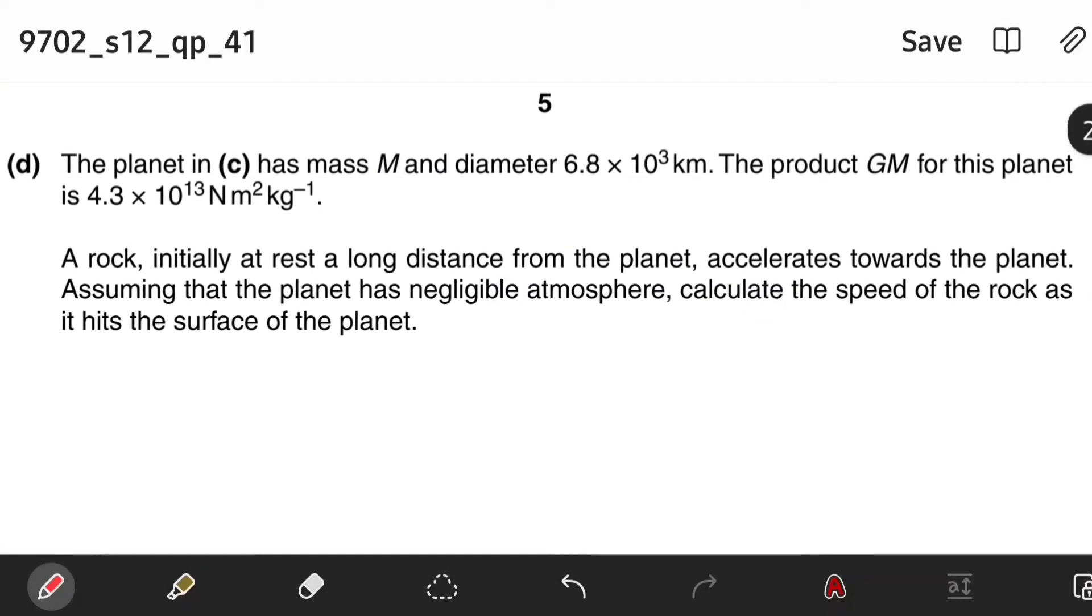Moving on to Part D. The planet in C has mass M and diameter d. The product GM for this planet is 4.3 × 10¹³ Nm²kg⁻¹. A rock, initially at rest a long distance from the planet, accelerates towards the planet. Assuming that the planet has negligible atmosphere, calculate the speed of the rock as it hits the surface of the planet.